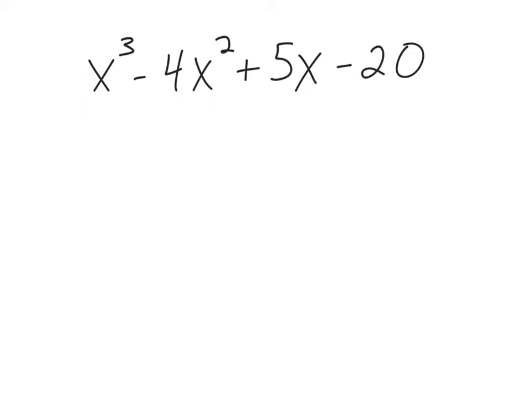That just means I'm going to make my first grouping and then my second grouping. Most of the time it works with just the first two and the last two, but you do want to find a grouping where they both have something in common — a common factor.